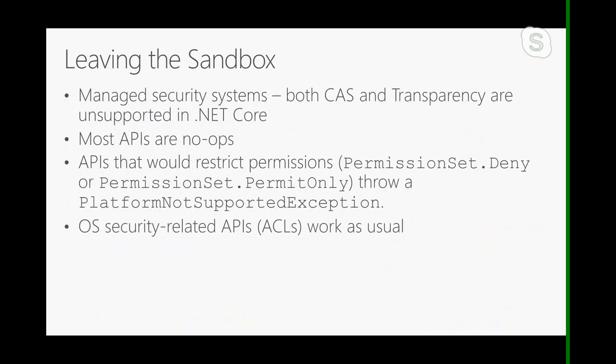Since about .NET 4, we've been giving the message that code access security is not a security boundary, because managed code is not the right place to implement a sandbox — there are too many ways to get around that. The right way to sandbox your code and run it partially trusted is at the OS level. You would do this with things like virtualization, containers, user accounts, or run as a UWP app with only certain app capabilities. Doing that in managed code has always been a challenge and has never worked particularly well. So in .NET Core, we go the final step and say none of these APIs do anything.